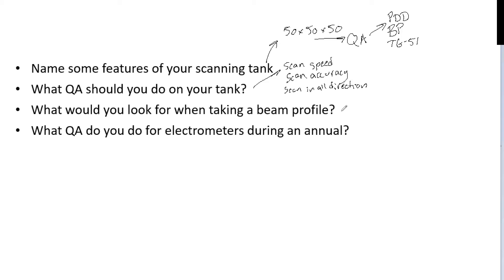So what would you look for when taking a beam profile? The first thing is speed. Most speeds are around 0.5 cm per second. However, if you do a slower speed, you get a smoother reading, you get better penumbra accuracy. If you're doing small fields, you want a really low speed. So something you need to consider.